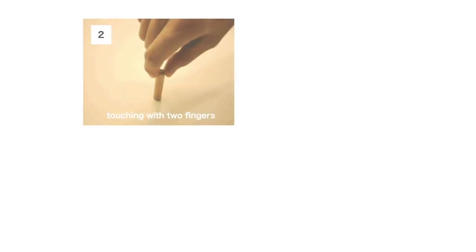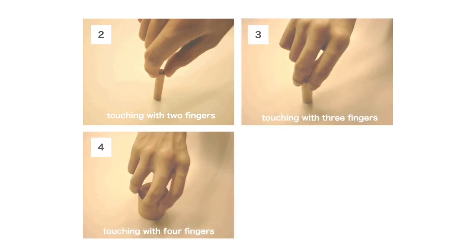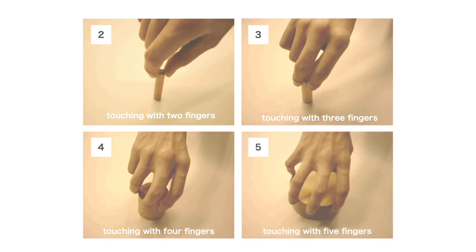We pick up small objects with two fingers, slightly larger ones with three fingers, larger ones with four fingers, and much larger ones with all five fingers. We focused on this natural unconscious human behavior.